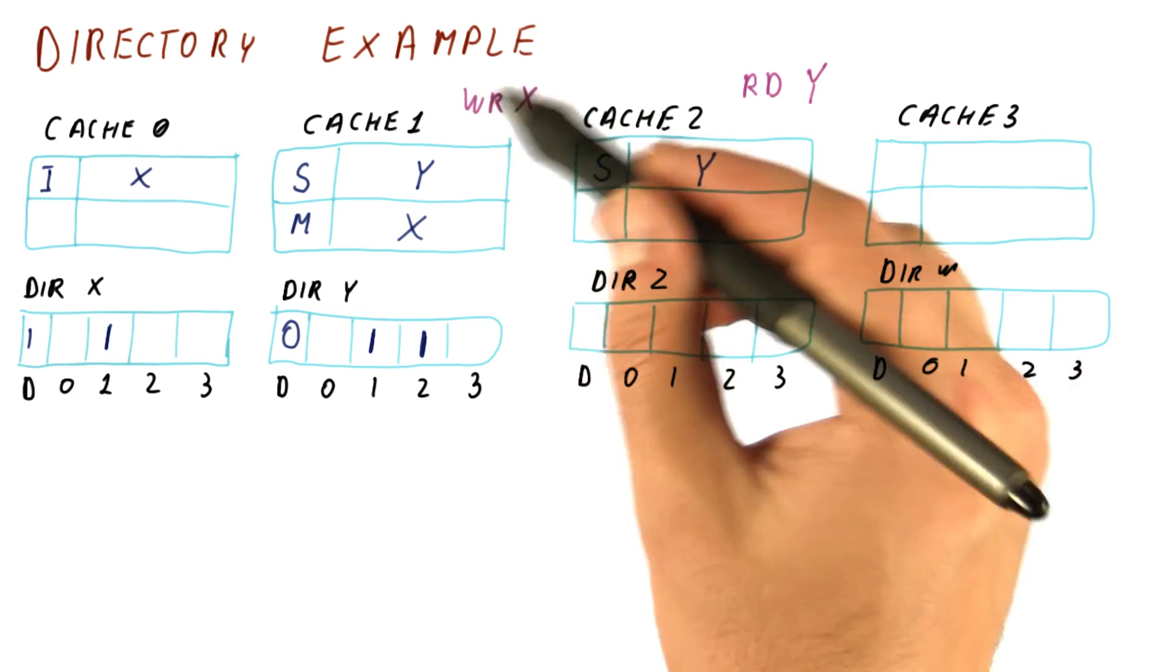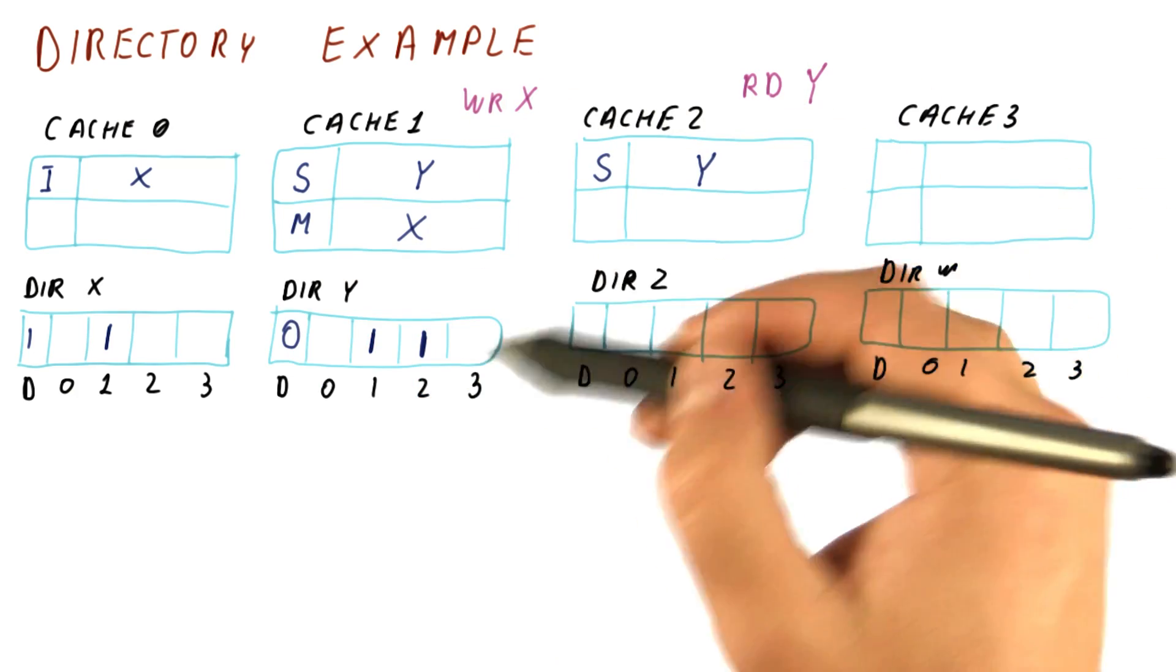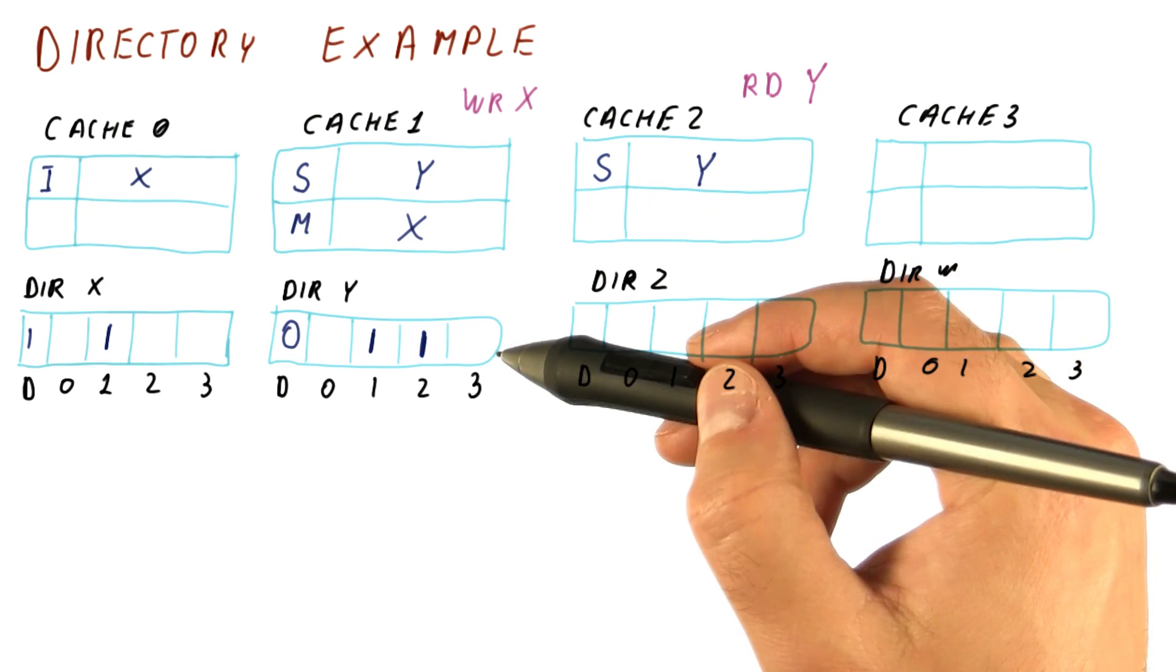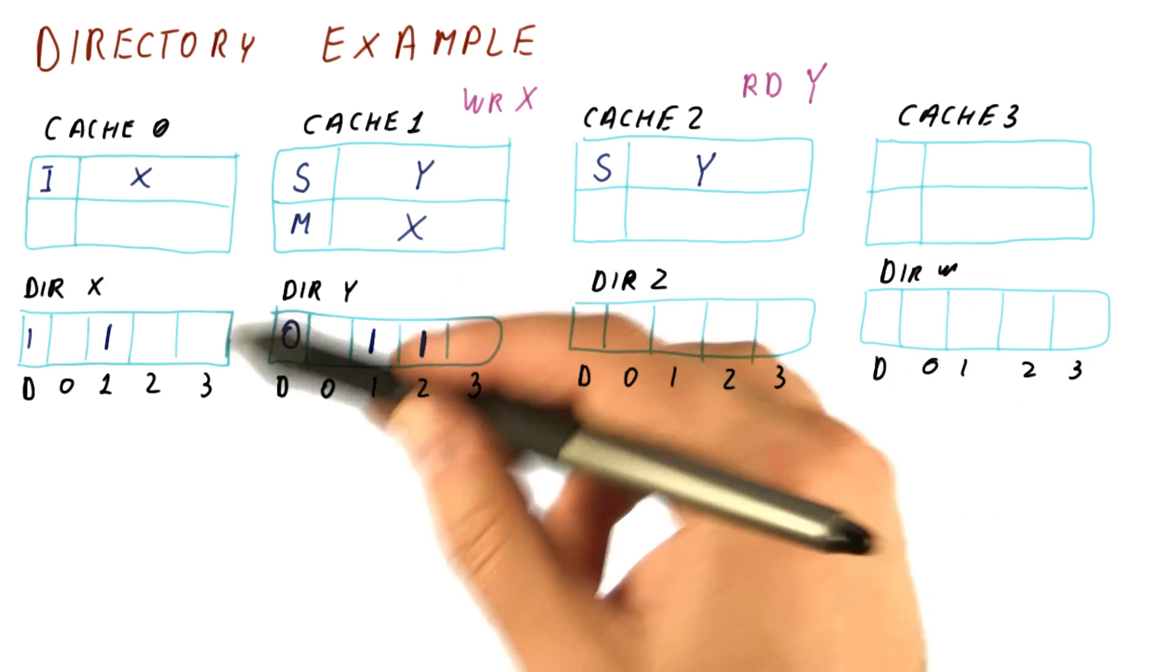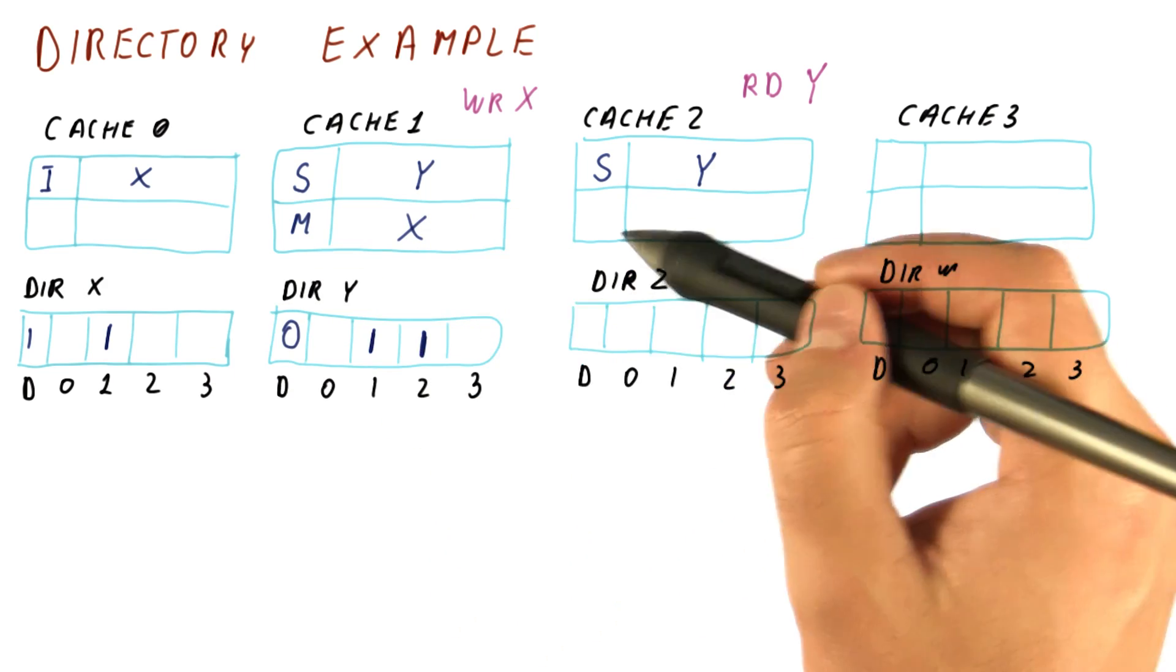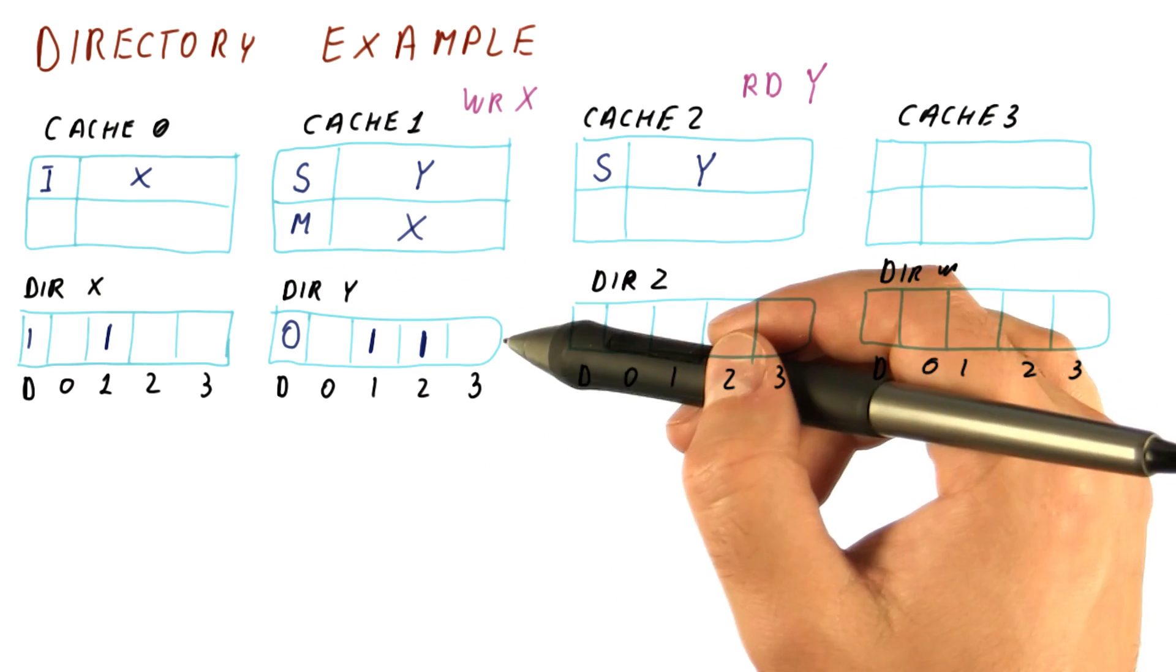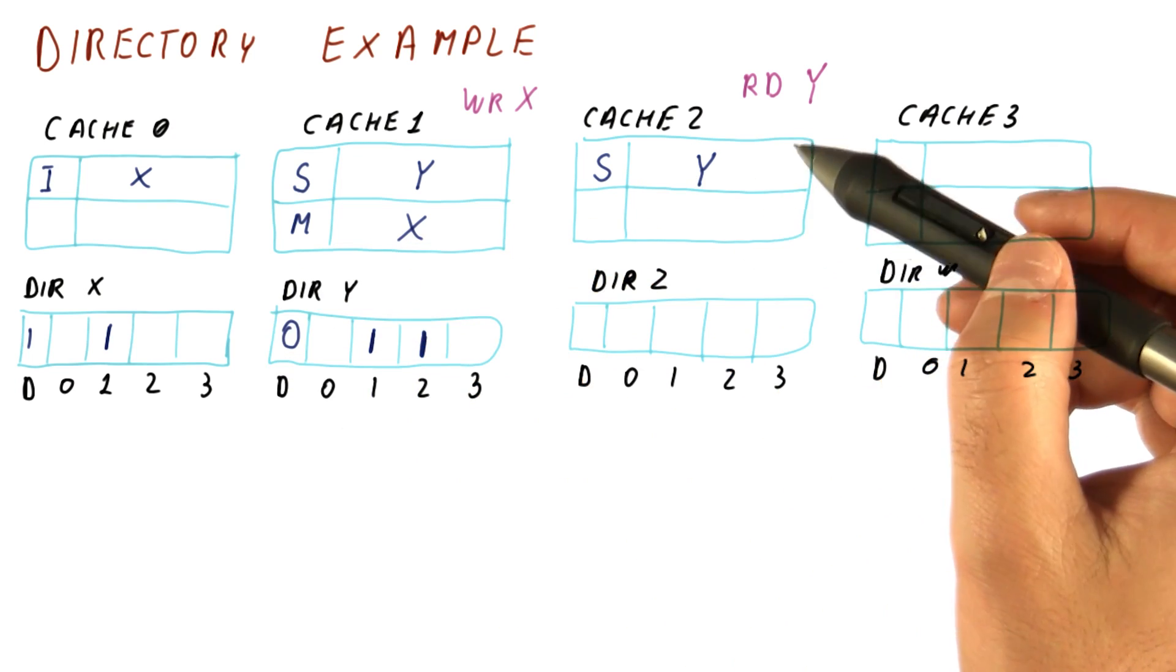And as you can see, the write to x and the read to y are largely proceeding independent of each other, except for maybe possible contention in the network. So if our network is good and has many different paths between these caches and directories, then really, there was no point where these requests competed with each other for anything.